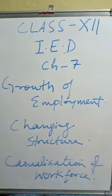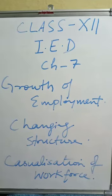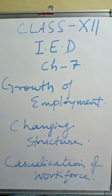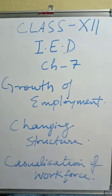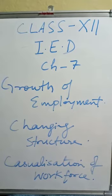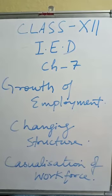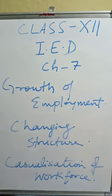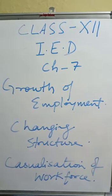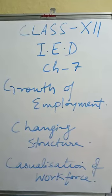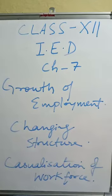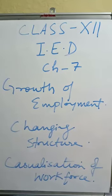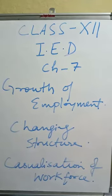Self-employment continues to be the major employment provider, but its share declined from 61% to 52% between 1972 and 1990. Regular salary employment remained stagnant at around 14%, with a marginal decrease from 15.4% in 1972 to 14.6% in 1999. The share of casual workers has increased from 23.2% in 1972 to 32.8% in 1999-2000.